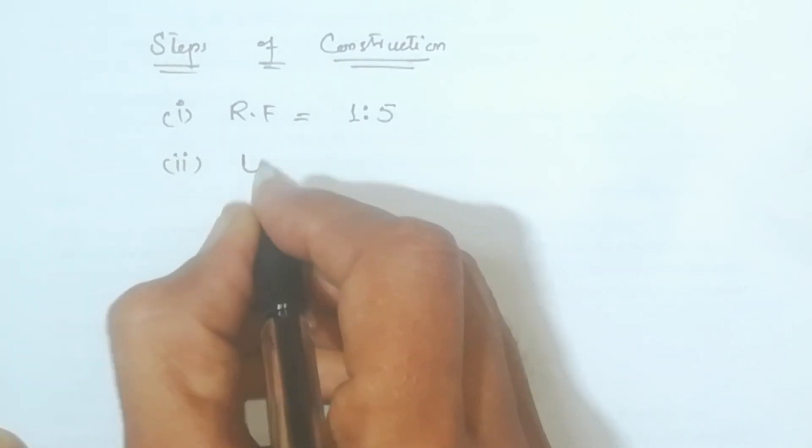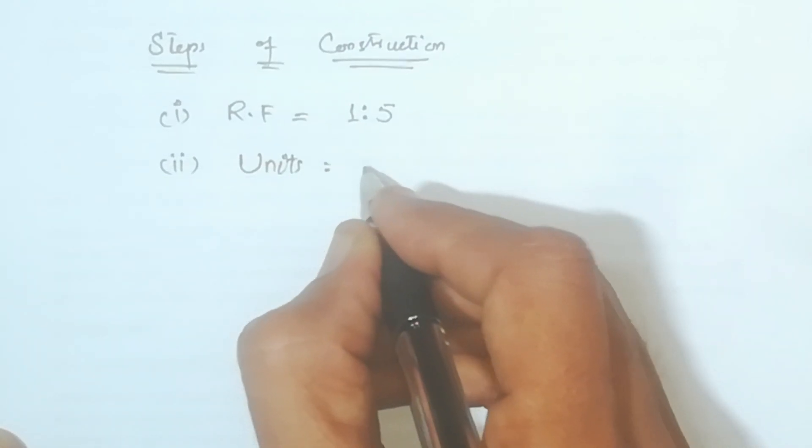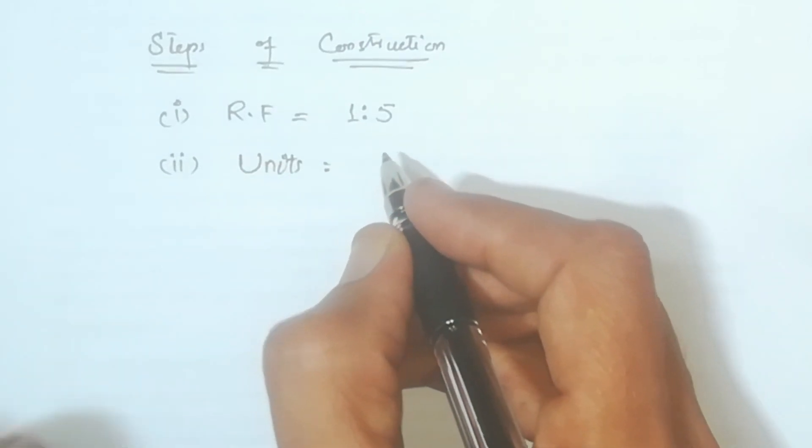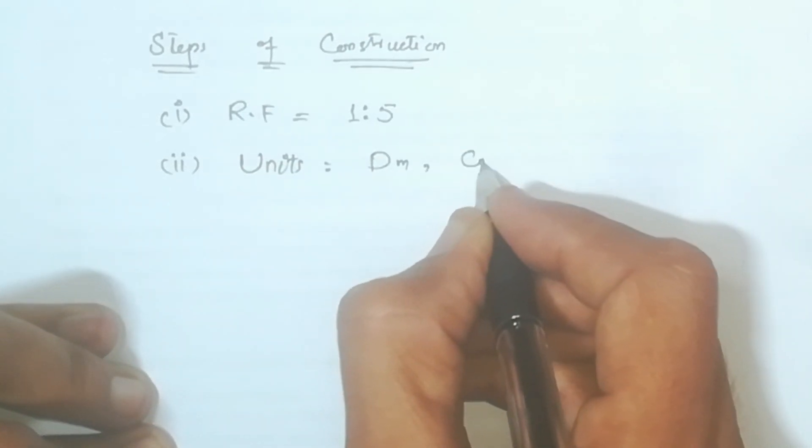Second, we have given units, which are decimeters and centimeters, so I will write here DM and CM.